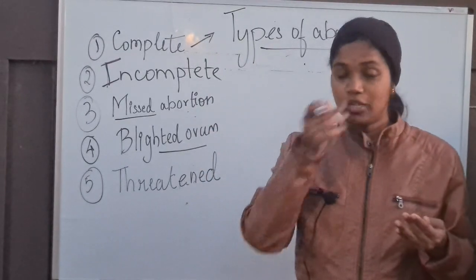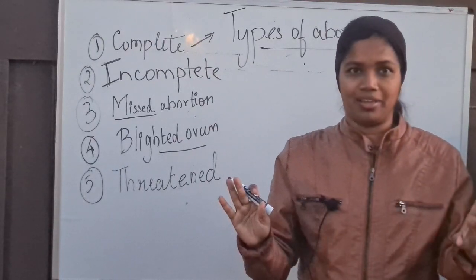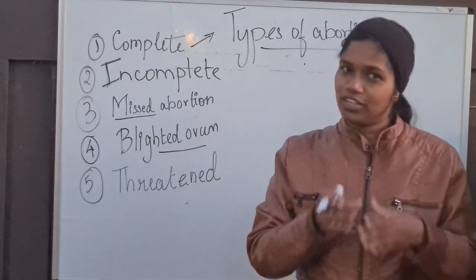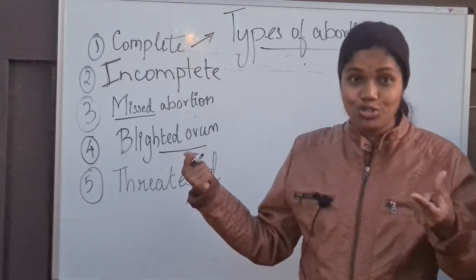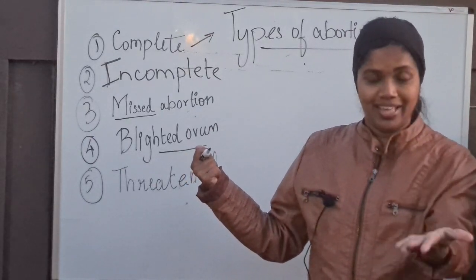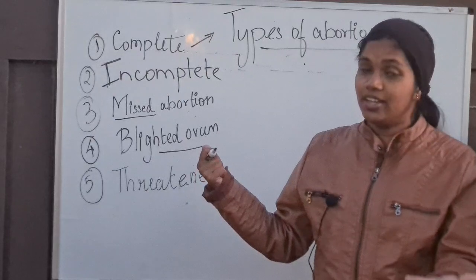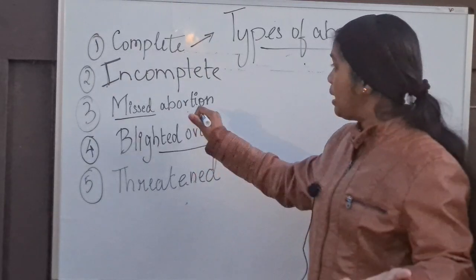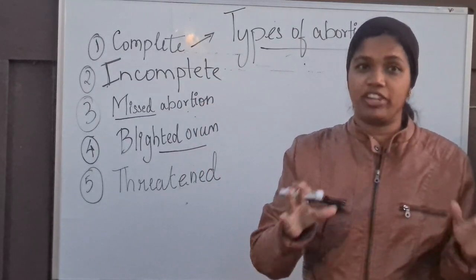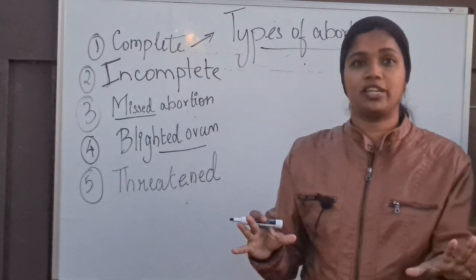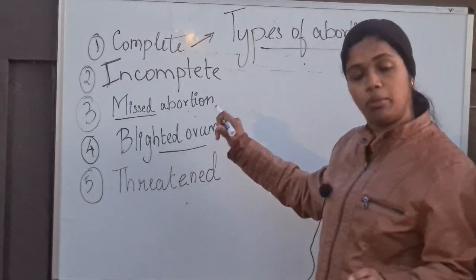In missed abortion, there is no fetal heart rate at all, so the fetus is no longer viable. We call it 'missed' because the body has missed detecting that the fetus is not viable — ideally, the body should start to expel the fetus, but it doesn't. When the patient comes to the doctor, the ultrasound detects no fetal heart rate, uterine contractions will not start, and the cervix will be closed. The treatment is again evacuation of the uterus.